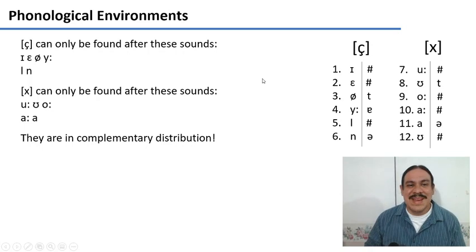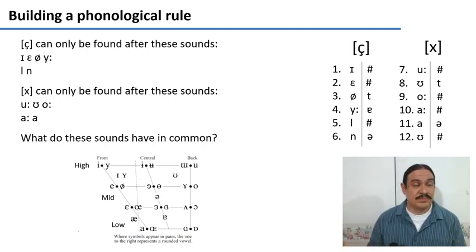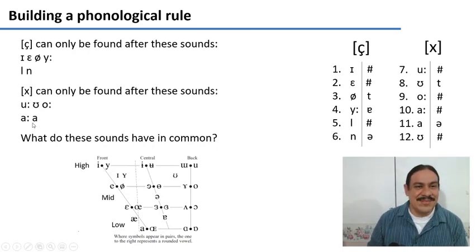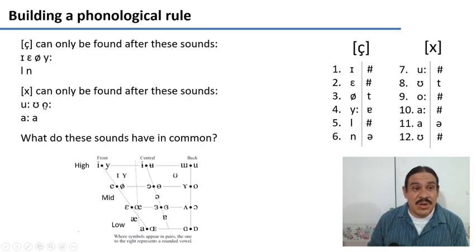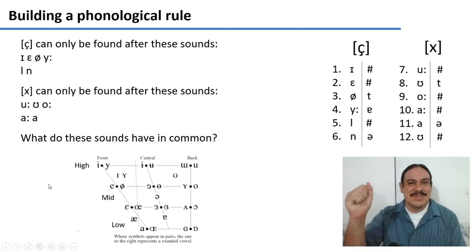But then, what do we do next? We need to figure out what these sounds have in common so that we can try to come up with a phonological rule. I separated them into natural classes — some are one kind of vowel, some are consonants, some are another kind of vowel, and these are yet another kind of vowel. Please try to find one feature that all of these sounds in each group might have in common. You can go and get your IPA table — I put the vowels here so that you can take a look at them. Give it a shot. Please pause the video.